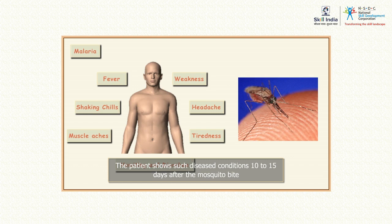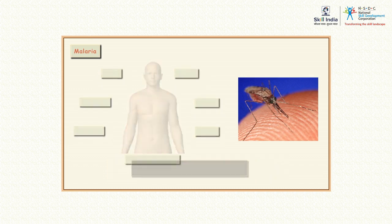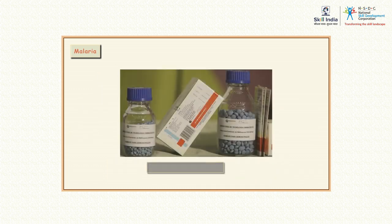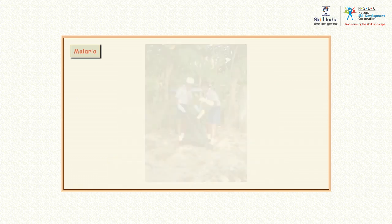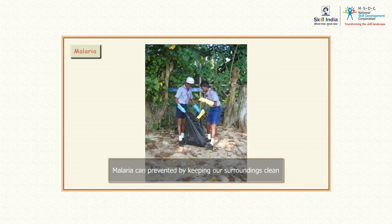If not treated, malaria can quickly become life threatening. The condition of malaria can be treated by using proper drugs and consuming a balanced diet. Malaria can be prevented by keeping our surroundings clean and preventing the growth of mosquitoes.